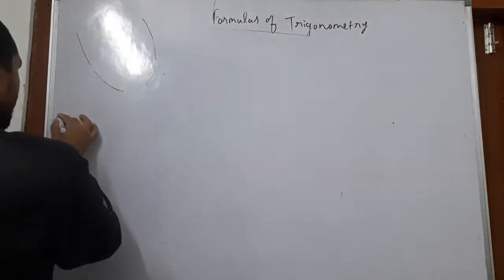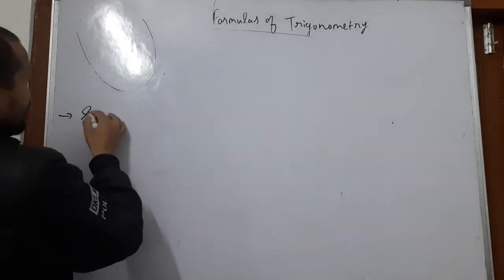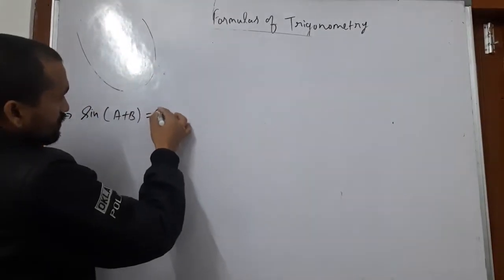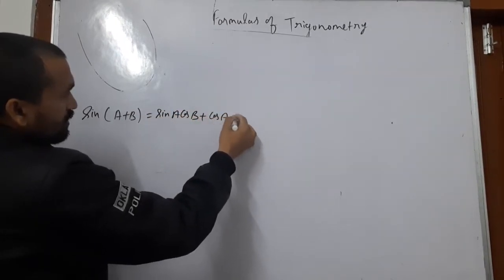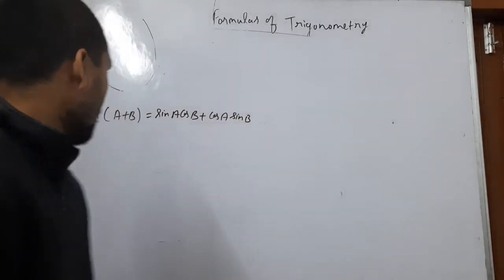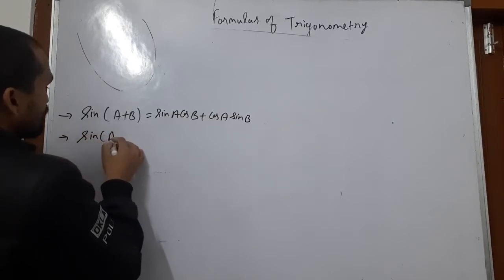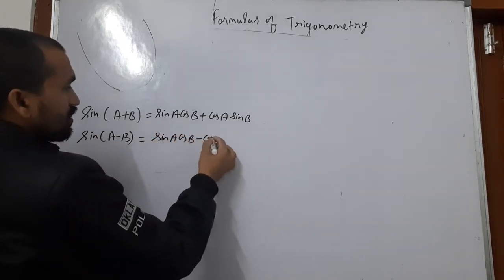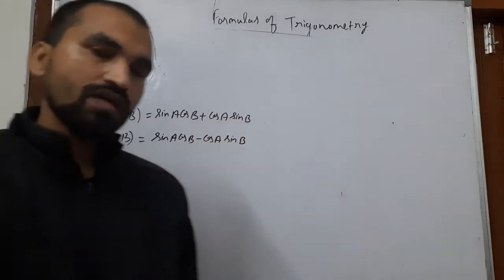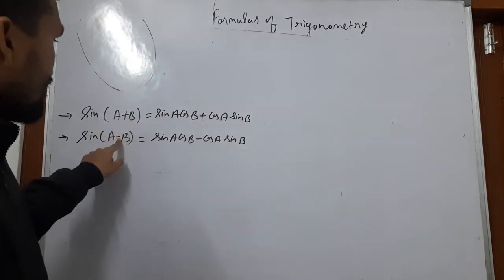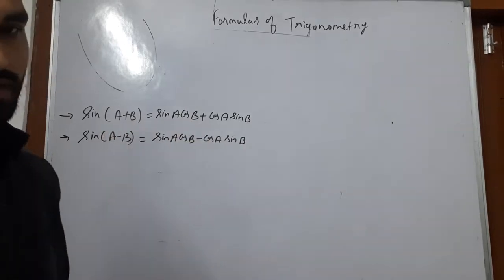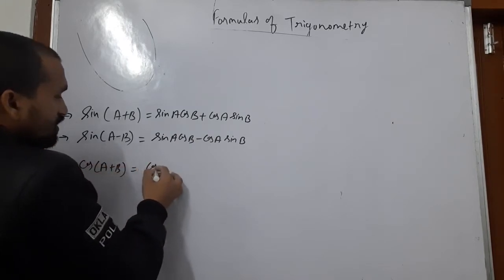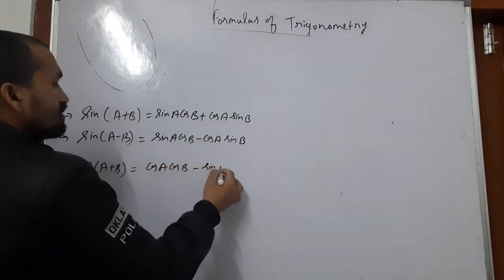Our remaining formulas: first of all, sin A plus B. Sin A plus B is equal to sin A cos B plus cos A sin B. Now if we use sin A minus B, then it will be sin A cos B minus cos A sin B. Next one: cos A plus B is equal to cos A cos B minus sin A sin B.